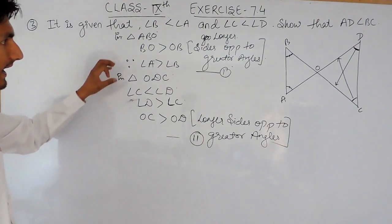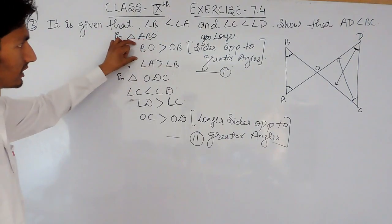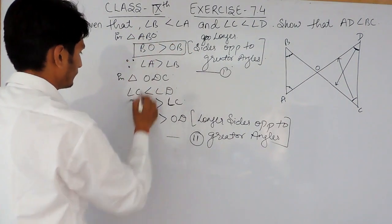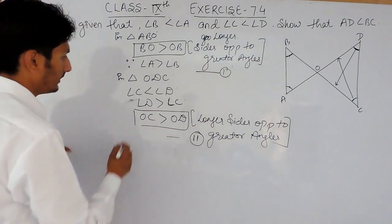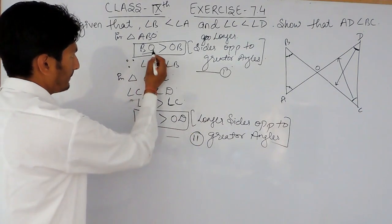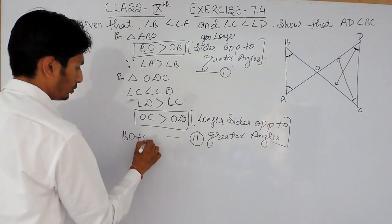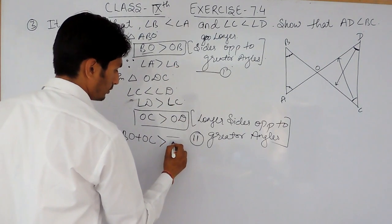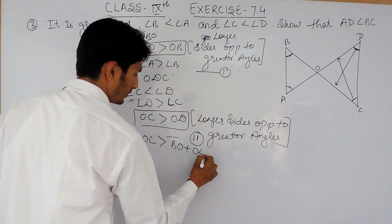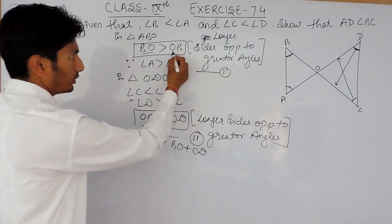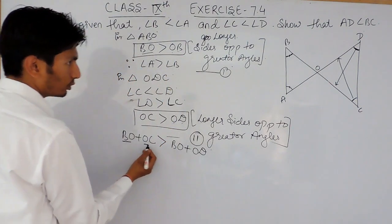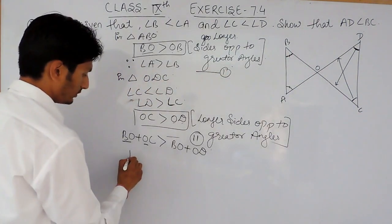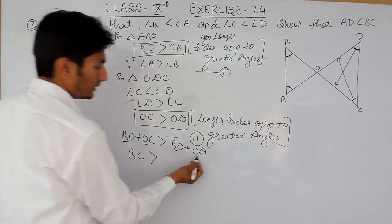Now if we add the first equation and the second equation, we get BO plus OC is greater than OA plus OD. Since BO plus OC equals BC, this gives us BC is greater than OA plus OD.